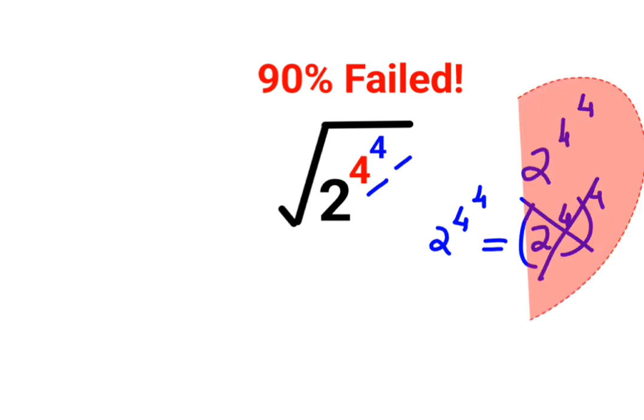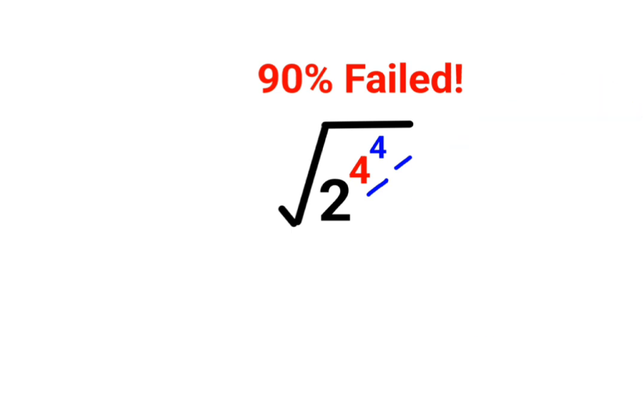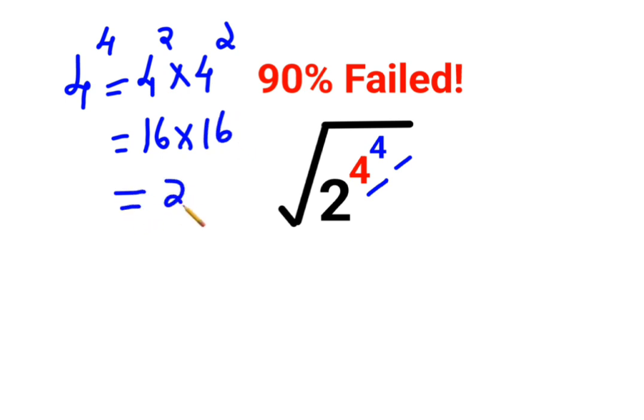In this case, what do we do? First we'll calculate what is 4 raised to 4. Now 4 raised to 4 can be written as 4 into 4 raised to 2 into 4 raised to 2, that is 16 into 16. So 16 multiplied by 16 is 256, so here we will say this is root of 2 raised to 256.